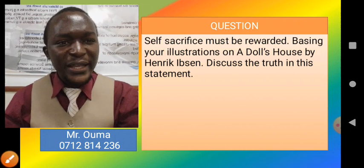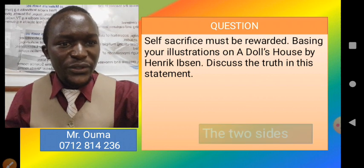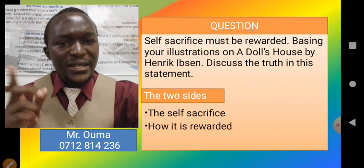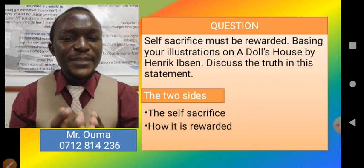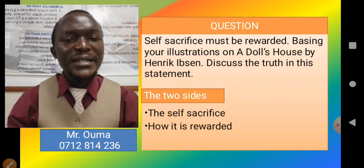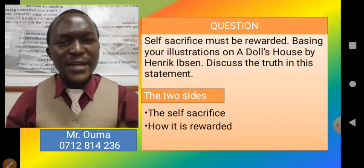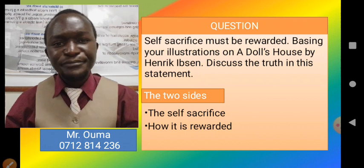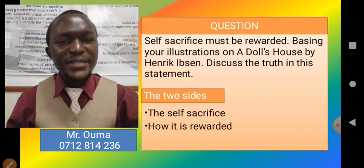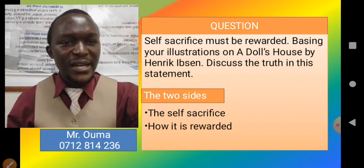So you have to know the key words — we've underlined them: self-sacrifice and the fact that it must be rewarded. Then you link that to the text. The two sides of this story must come out: the self-sacrifice and the fact that they are rewarded. Even in your introduction, the general statement you give must reflect that there are some characters in this play, A Doll's House, that make some self-sacrifice and in the end are rewarded. But remember, you are not supposed to use the statement as it is — you must paraphrase, writing in your own words using synonyms and restructuring the sentence.